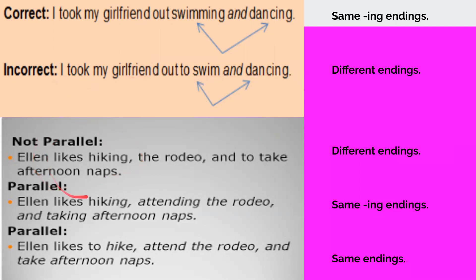Here we have a not parallel example as well. Ellen likes hiking with the -ing, the rodeo no -ing, and to take afternoon naps. Again no -ing. To make this one parallel we would have to have all of them with an -ing or have them all be regular.